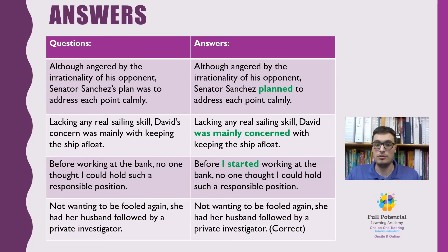Here are the answers to the previous questions. The first sentence: 'plan' must be changed to 'planned,' so that way we know that the senator was angry at its opponent, not the plan the senator had itself, because a plan cannot be angry at someone. The second sentence: we need to add additional words to 'concern' so that way it makes more sense as well. 'Was mainly concerned' will lead us to know that David was the one lacking sailing skills and not the concern itself.